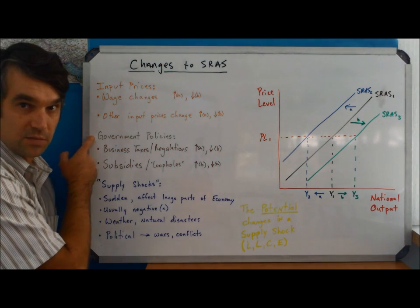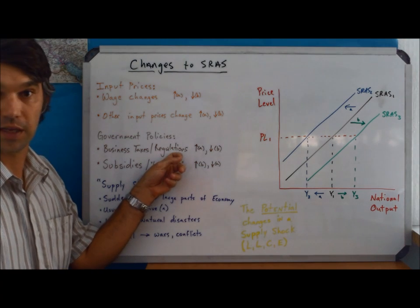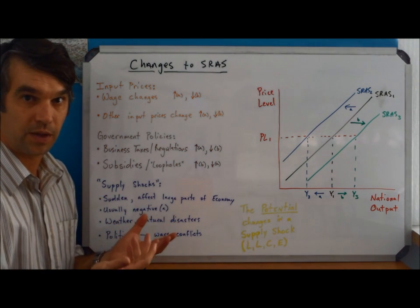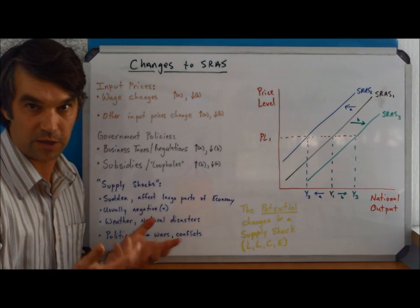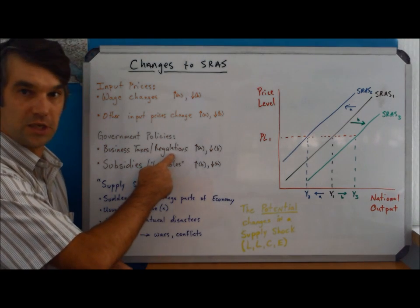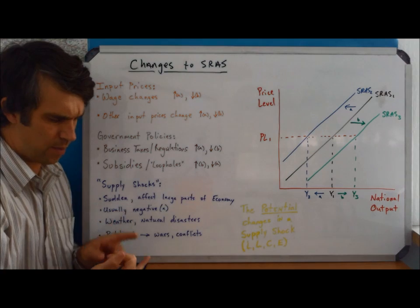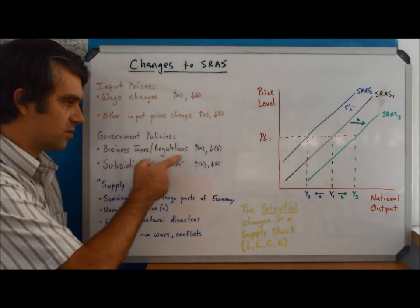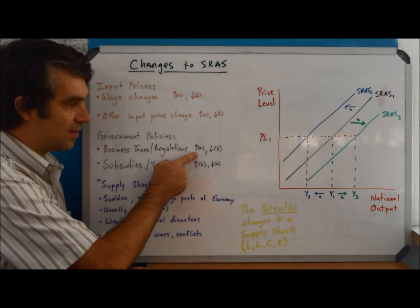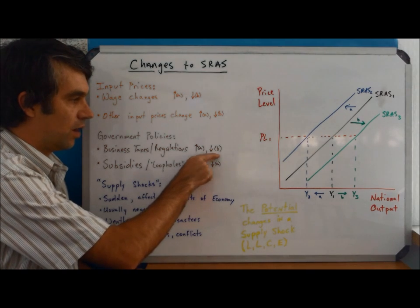Secondly, we can have government policies. Most commonly, if we see taxes on businesses change. This could also include things like regulations. The summer I worked construction, I got to see firsthand how work would just have to stop when we were waiting for a building inspector. We couldn't do any further work, but we were still getting paid. Because of those regulations, it was more expensive for my employer. When business taxes, taxes on profits, maybe having to buy a license or just the kind of red tape that a business has to go through, when those things become greater, that's going to be a higher cost. So we're going to see short run aggregate supply shift to the left, and when they become lower, we're going to see a shift to the right.